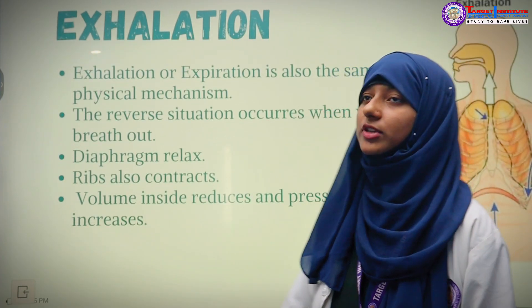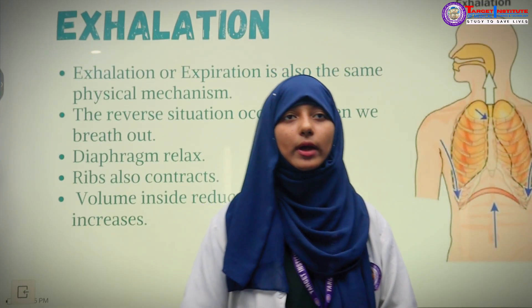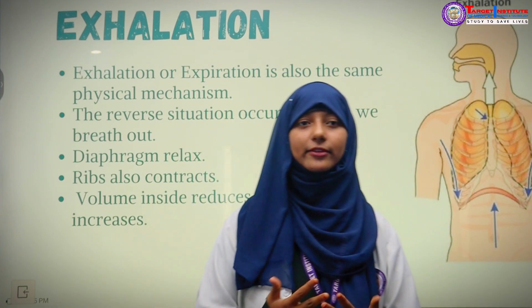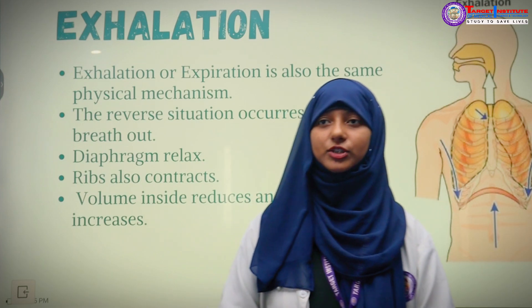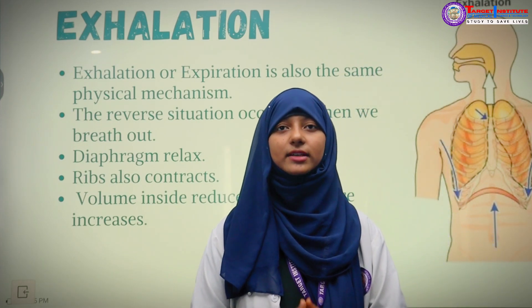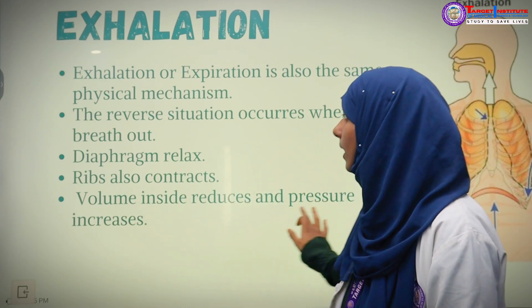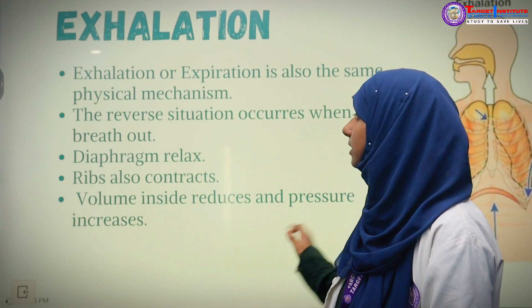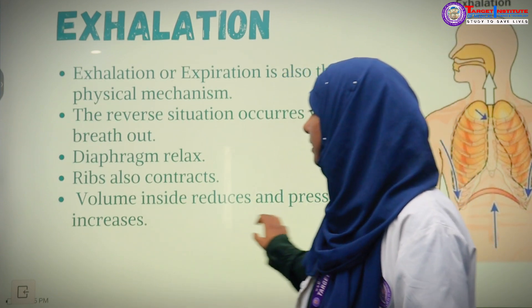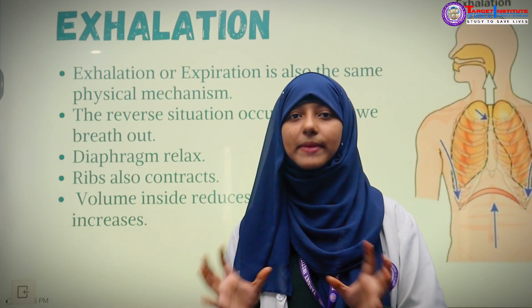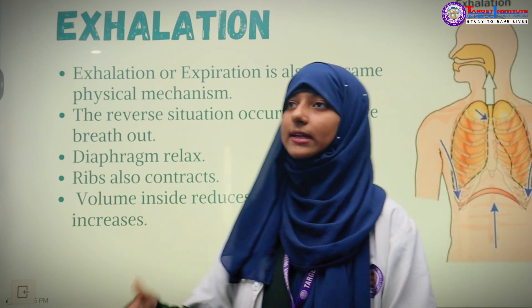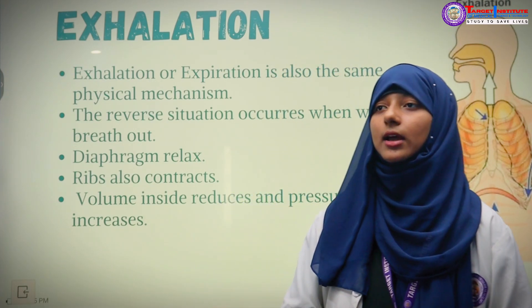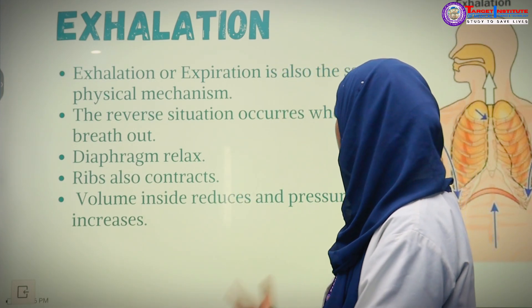Now comes the exhalation process, also called expiration. During inhalation the diaphragm flattens, but in exhalation the diaphragm contracts back and relaxes into its dome shape. It is a reverse situation — the diaphragm relaxes and the rib cage contracts back to its original shape. The volume inside the lungs reduces and pressure increases, which is why the air present inside the lungs rushes out through the nostrils.